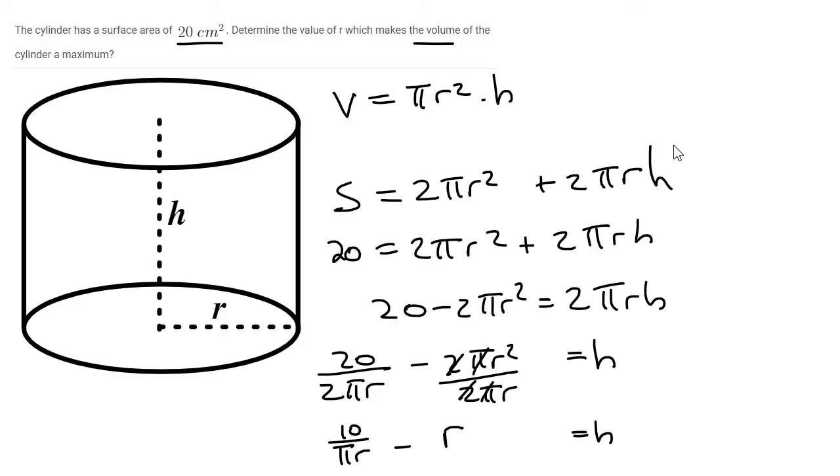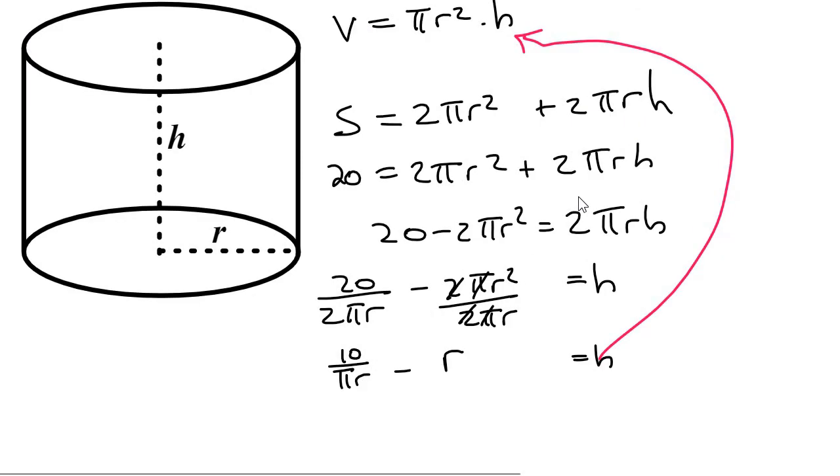We can now use this h in the place of that h over there. And so I'm going to rewrite the volume expression down here as πr², and then in brackets we can replace the h with 10 over πr minus r.